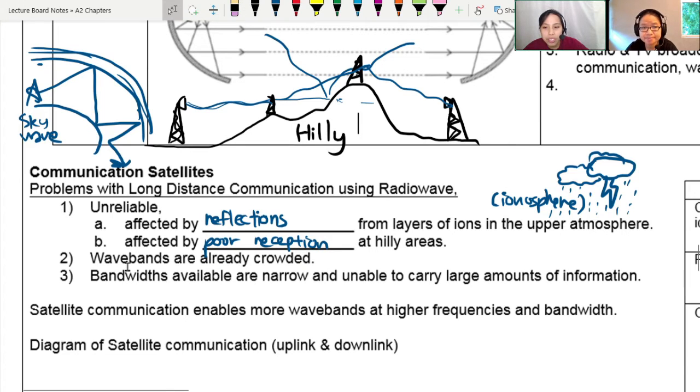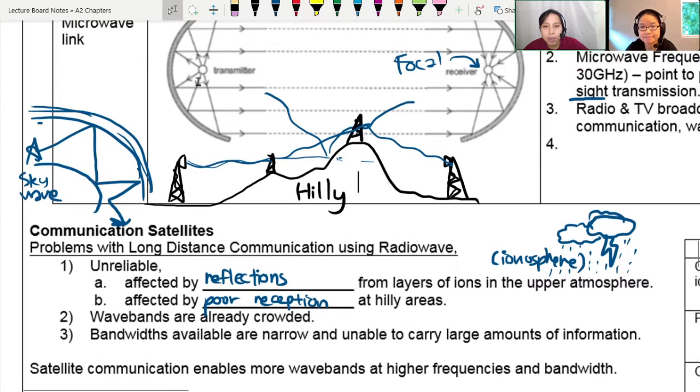The other problems is your wave band, very crowded. Got a lot of wave flying here and there. And also your bandwidth. Very crowded already, very narrow. So you cannot send big amounts of information like video streaming. Very hard, especially if you don't have all these towers in between. So long distance, a bit hard.